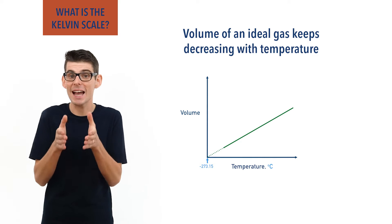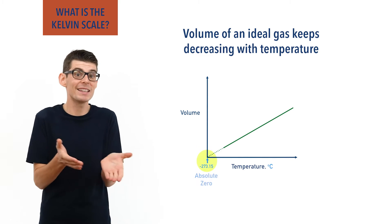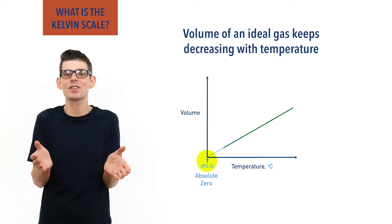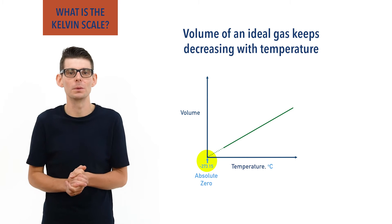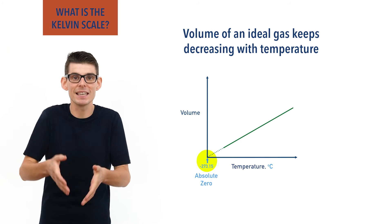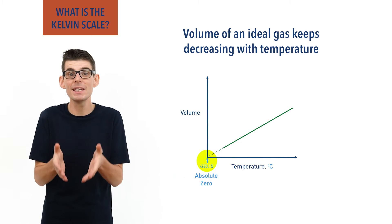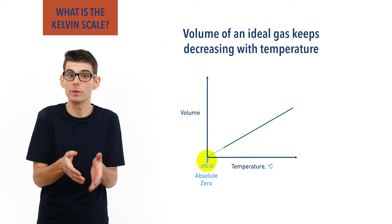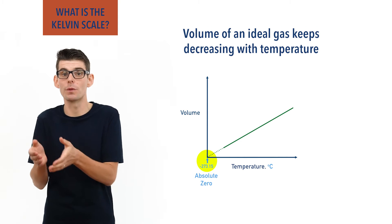This point is considered absolute zero and is theoretical. We can't actually get things quite that cold. At this point an ideal gas has zero heat energy, meaning its molecules can't move and this is why it has no volume.